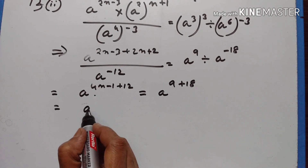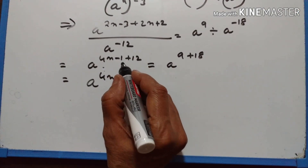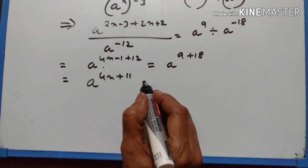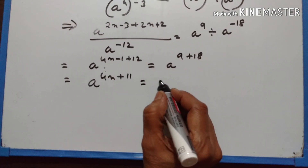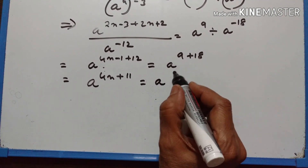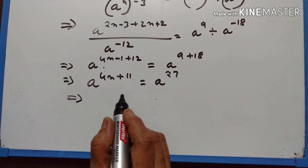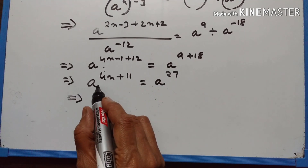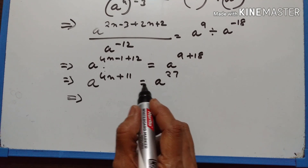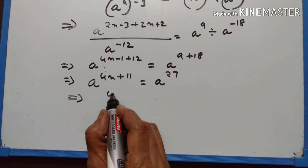a to the power of 4n. 12 minus 1 is equal to plus 11, is equal to a to the power of 18 plus 9, which is equal to 27. Now the base is the same, therefore the powers are also the same.